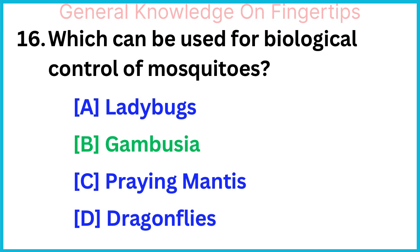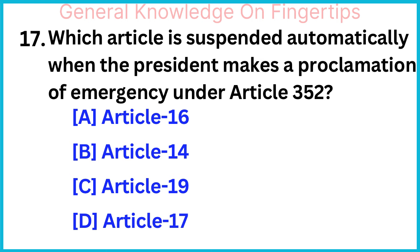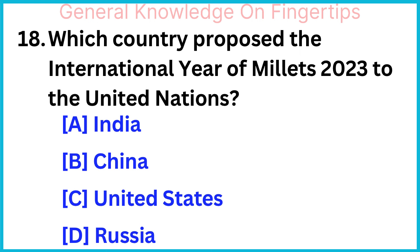Which article is suspended automatically when the president makes a proclamation of emergency under Article 352? Article 19. Which country proposed the International Year of Millets 2023 to the United Nations? India.